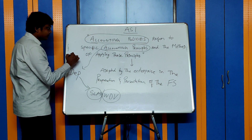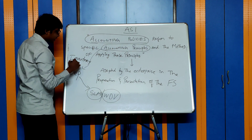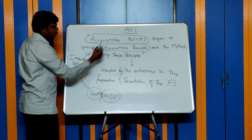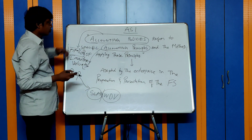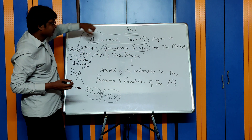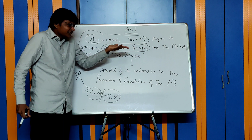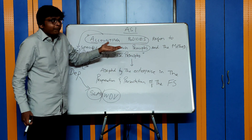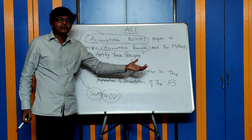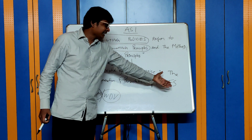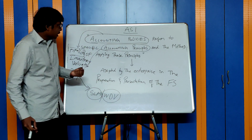Another example: inventory valuation is an accounting principle. What is the accounting policy? FIFO or LIFO method. So accounting policies — FIFO or LIFO — refer to specific accounting principles adopted by the enterprise in preparation and presentation of financial statements, which include your profit and loss account, balance sheet, notes to account, and cash flow statement.